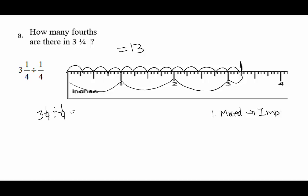Step 1. Change our mixed number to an improper fraction by using the multiply add method, and we get 13 over 4.